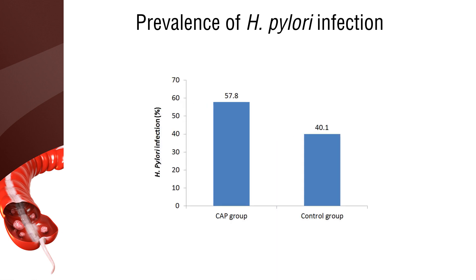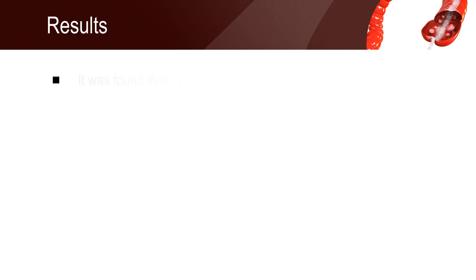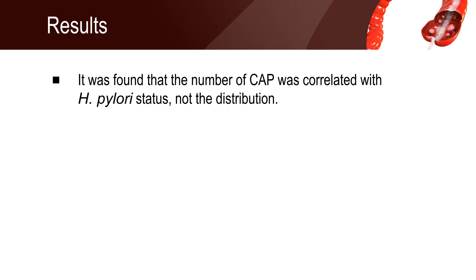The prevalence of Helicobacter pylori infection was higher in the colorectal adenomatous polyps group as compared to the control group. It was found that the number of colorectal adenomatous polyps was correlated with Helicobacter pylori status, not the distribution.